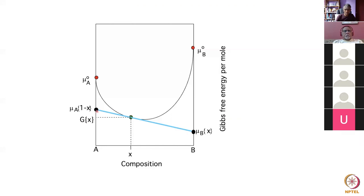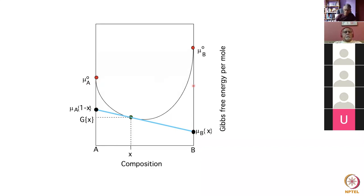This is the graph showing the free energy of a solution of composition x, with the chemical potential of A and B at that particular concentration. We partition the free energy into a component due to A and a component due to B, relative to the free energies of pure A and pure B. There is an enormous difference between the chemical potential and the free energy of the pure element, and that difference is what we write as RT ln(a_A), where a_A is the activity of A.